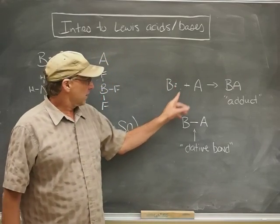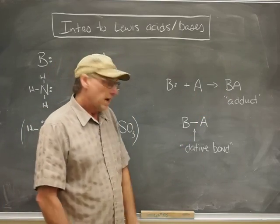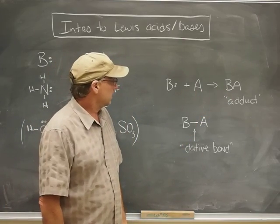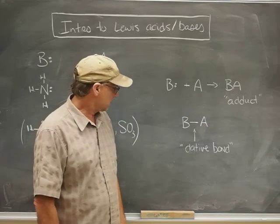Well, the base with its lone pair combines with the acid to produce something called BA. And the BA gets a special name in Lewis acid-base chemistry. It's called the Lewis acid-base adduct or just the adduct.